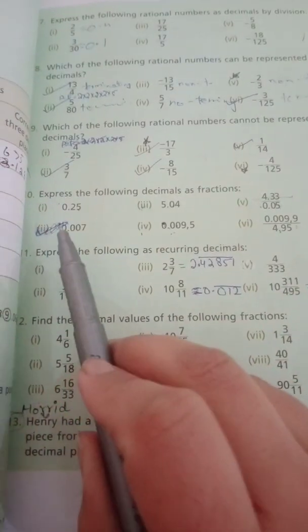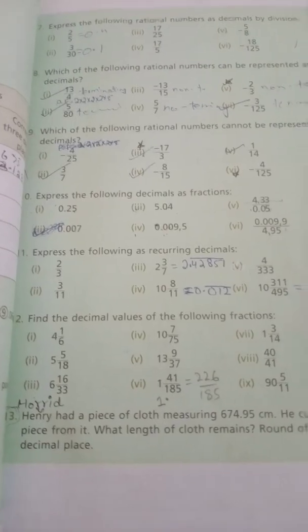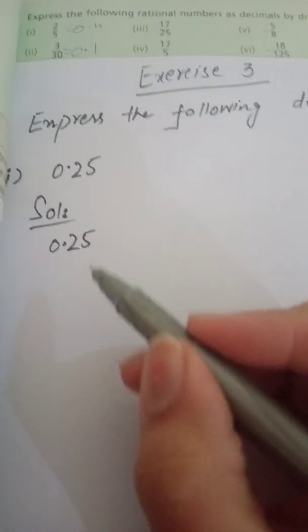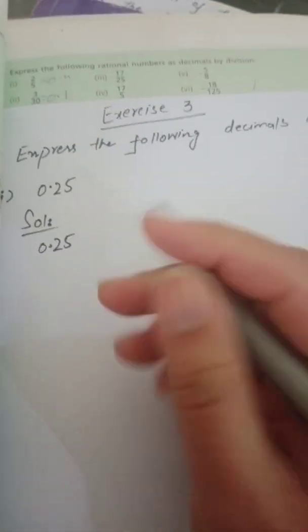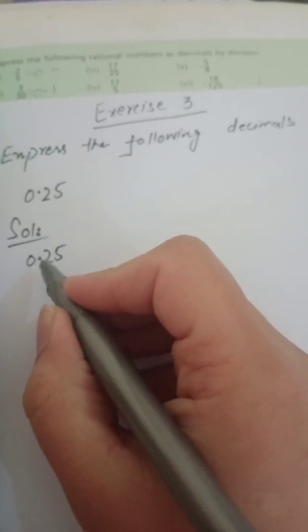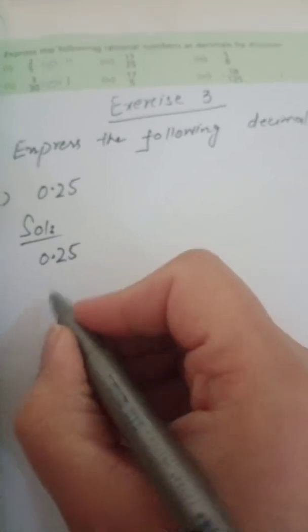Question number 10: express the following decimals as fractions. Part number one is 0.25. In this question we have been asked to convert decimals into fractions. A fraction is something that has a numerator and a denominator.